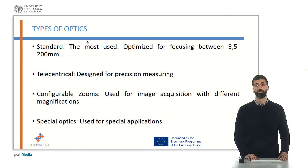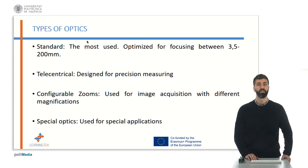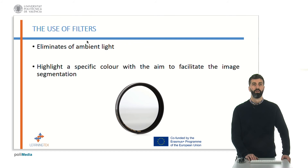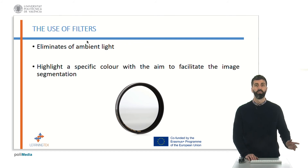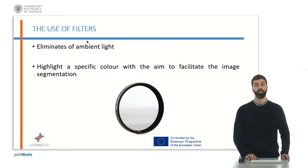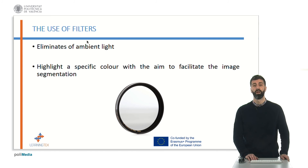Configurable zooms are used when an image with different magnifications is needed. The last type are special optics, used for special applications. On one hand, the use of filters is the perfect way to eliminate ambient light and shadows in image acquisition. On the other hand, with different color filters it is possible to highlight a specific color in order to ease future image segmentation.